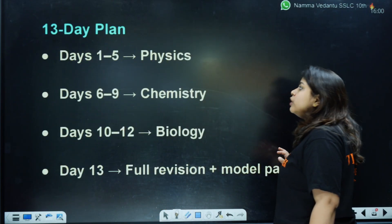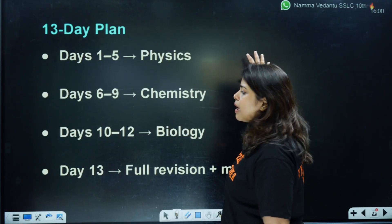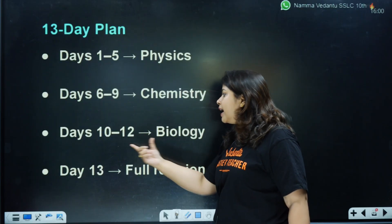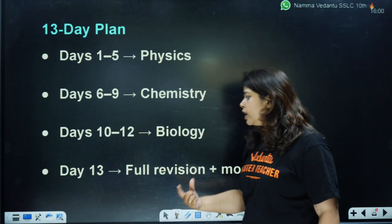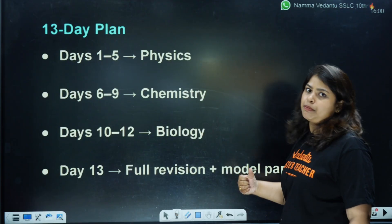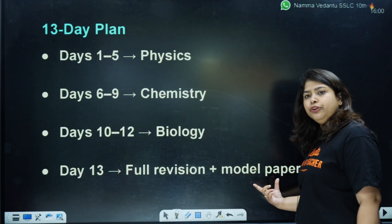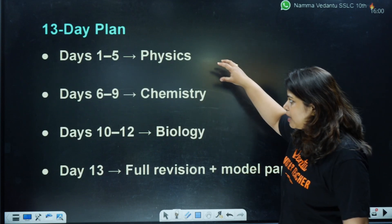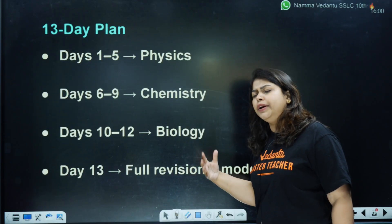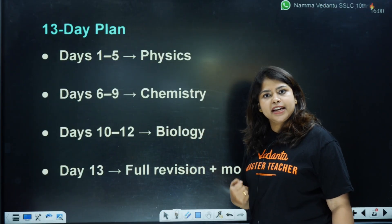Next: Day 1 to 5, you will do physics. Same way for maths and social science. Day 6 to 9, you are going to do chemistry. Day 10 to 12, you are going to do biology. And Day 13 is full revision plus one model paper — or you can solve the preparatory paper, which would be more helpful. So if you follow this, one task timetable: one hour physics, one hour mathematics, one hour social science. Three hours of study a day is very important.